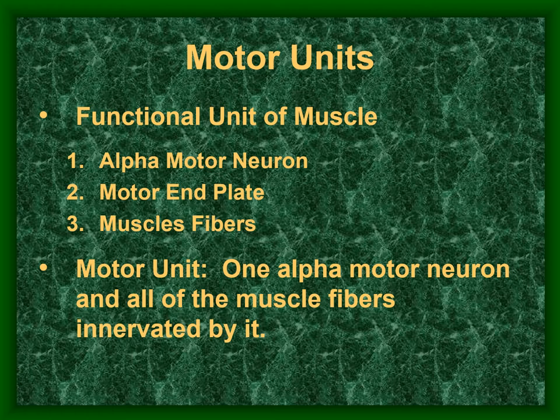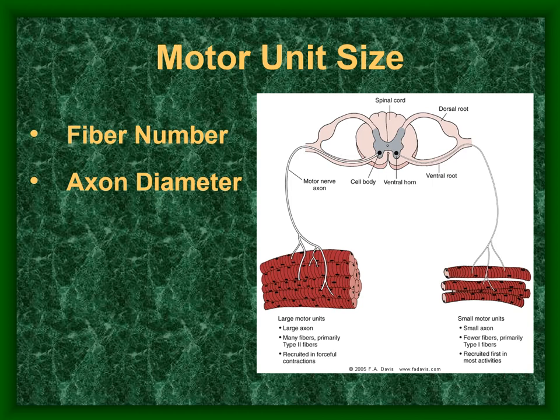The number of muscle fibers per motor unit depends on what the muscle needs to do. For fine control — like the extraocular muscles — one alpha motor neuron innervates very few fibers. For massive power — like the gluteus maximus — one alpha motor neuron may be dedicated to over a thousand muscle fibers.